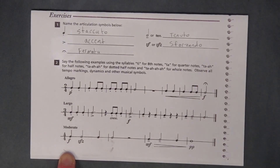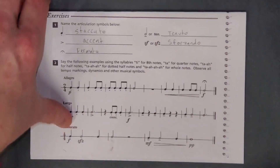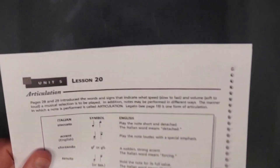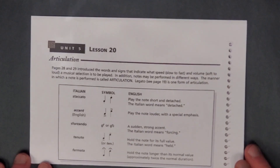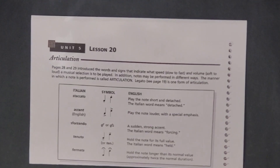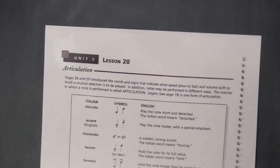Anyway, there you have it — Alfred's Essentials of Music Theory, Unit 5, Lesson 20. Please like this video and subscribe. Click the links to watch the next lesson or jump ahead to the Unit 5 review.